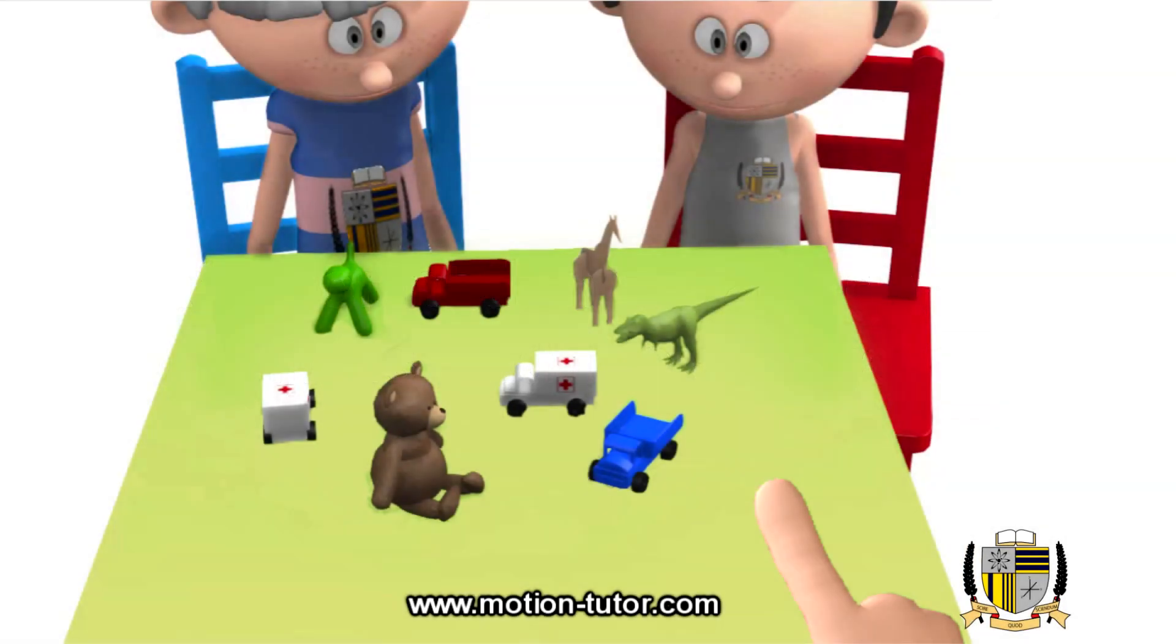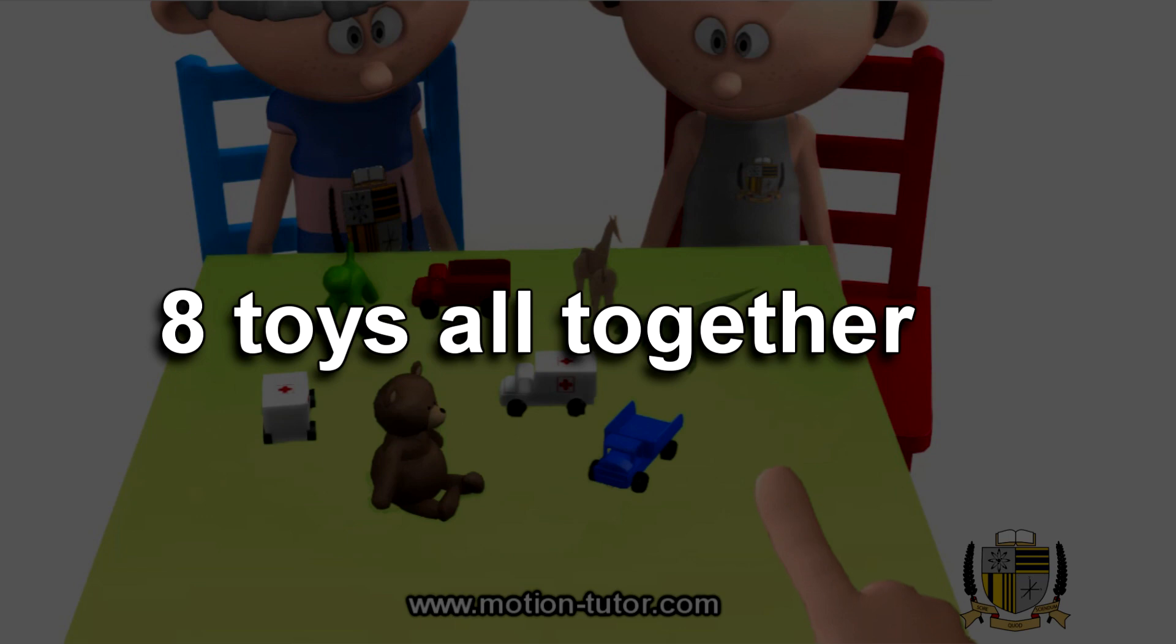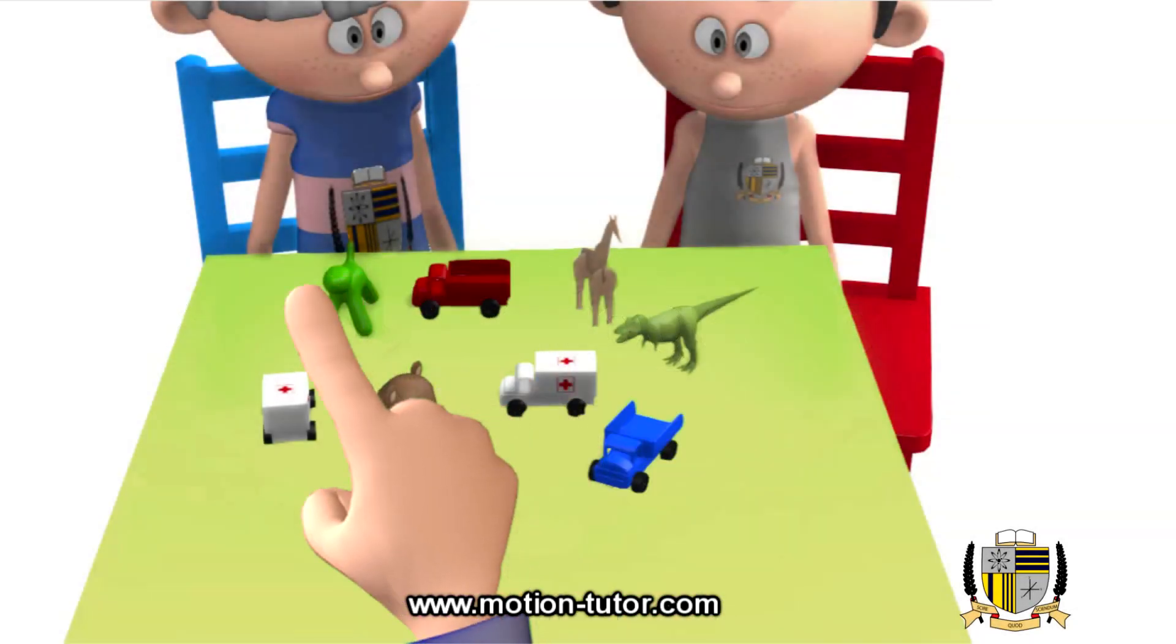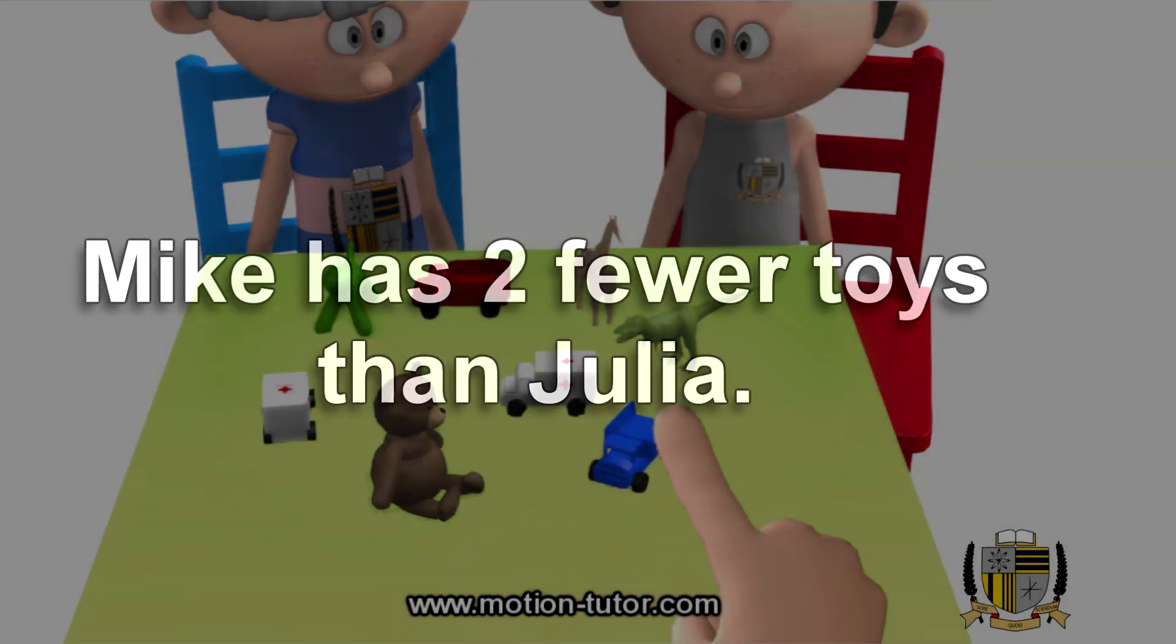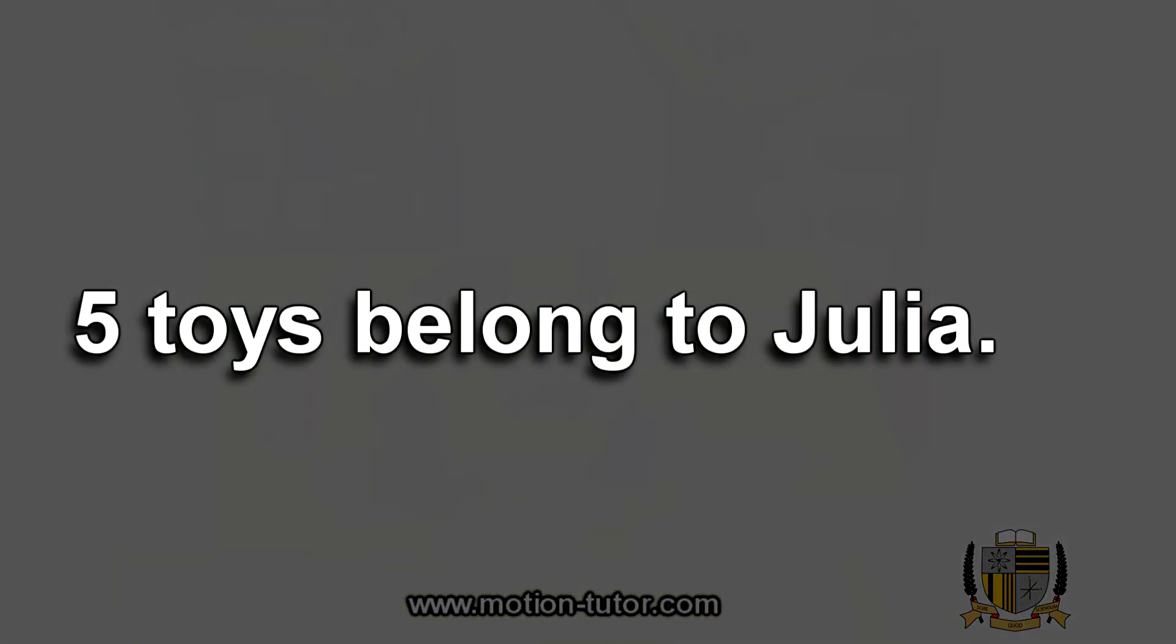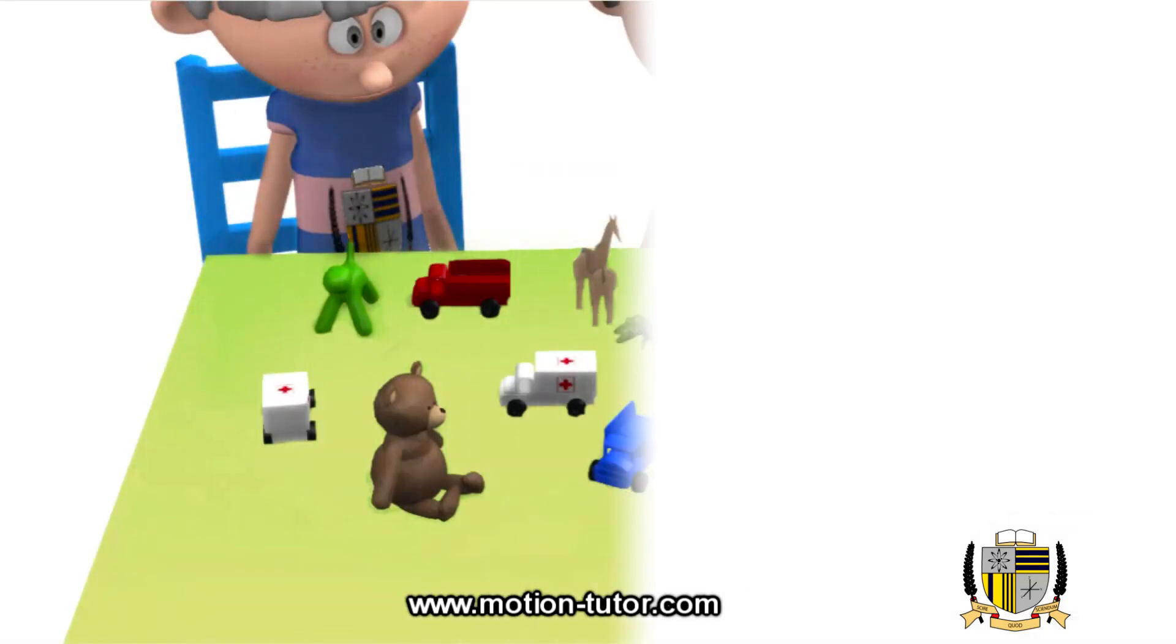Well, we're told that they have eight toys all together. So that's eight toys all totaled together. And we're told that Mike has two fewer toys than Julia. And we're also told that five toys in the bunch belongs to Julia. So how do we do this?